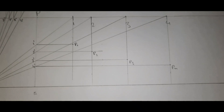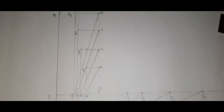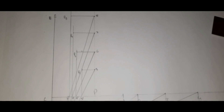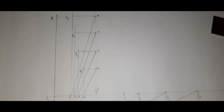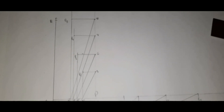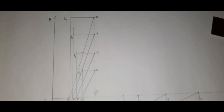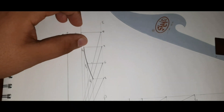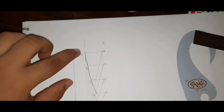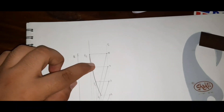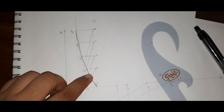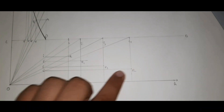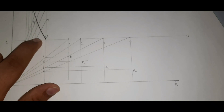Here we got 4 points on one side and 4 points on the other side — total 8 points. Now join these points using a French curve: first join these 3 points, then these 2 points, at last these 2 points, and similarly join the remaining 4 points. Here the hyperbola is ready.